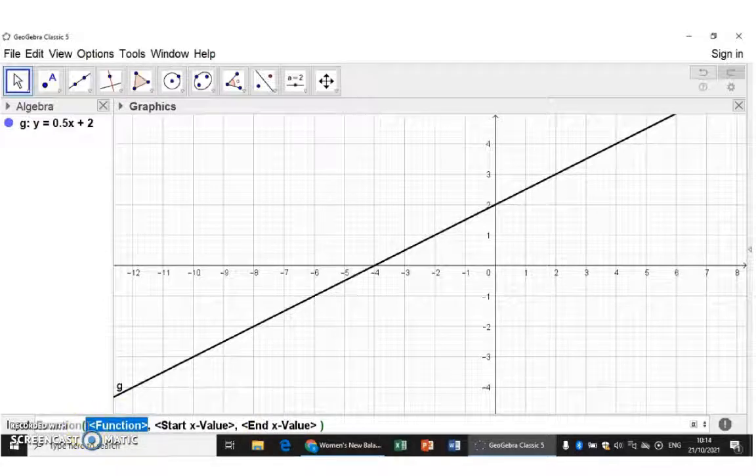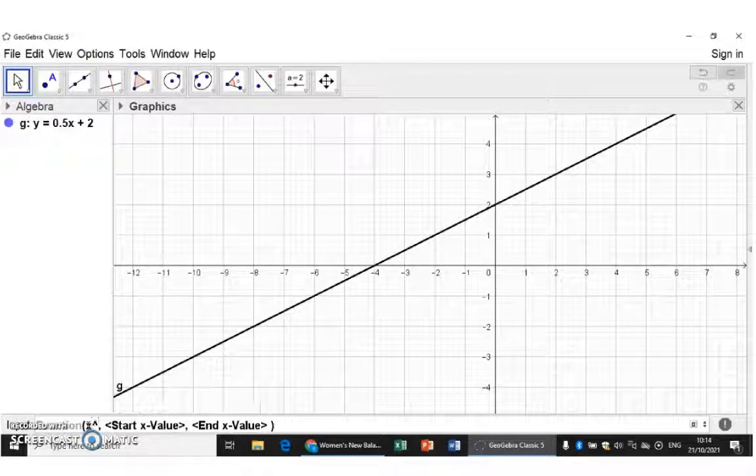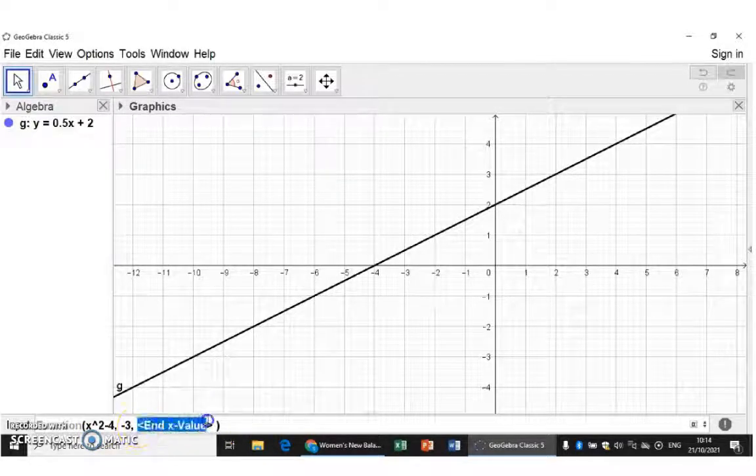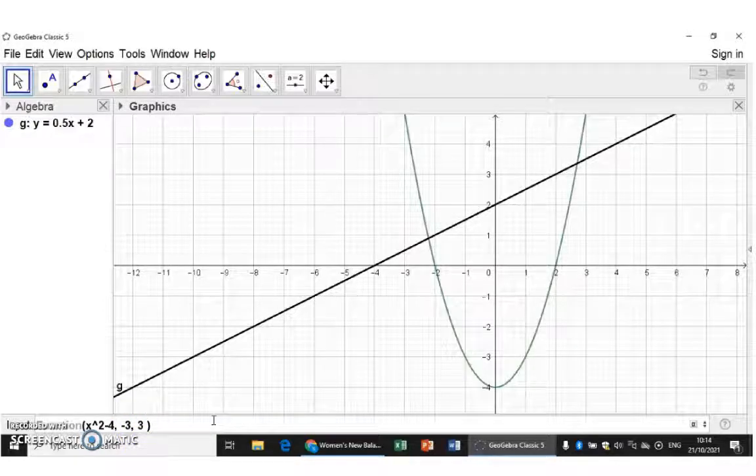Let's try a parabola. So x and then to the power of 2 will be shift and 6, minus 4. So our equation x squared minus 4 and my starting value, I'm going to make minus 3 and then end at an x value of 3.